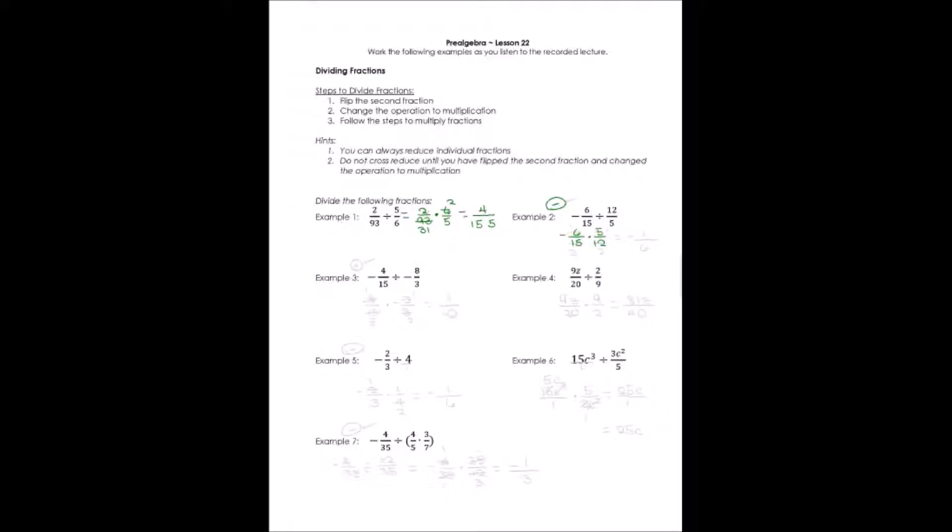Now it looks like I can cross-reduce some of these things. 5 will go into both 5 and 15, and 6 will divide into both 6 and 12. Now I just have to multiply numerator times numerator, remembering the negative that I'm multiplying, and denominator times denominator. My answer, negative 1/6. I said my answer would be negative, and it is.